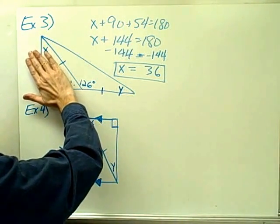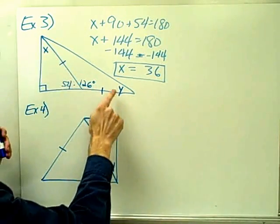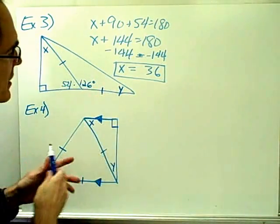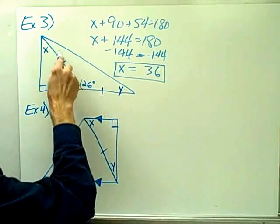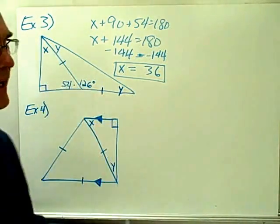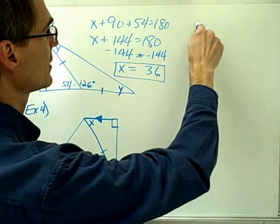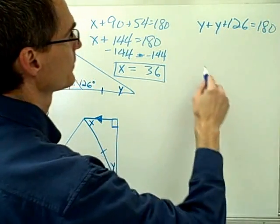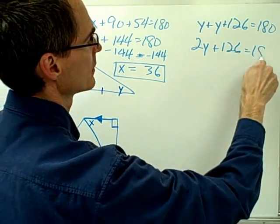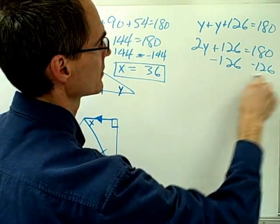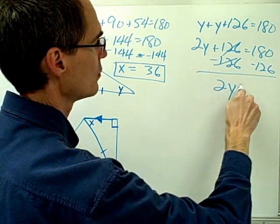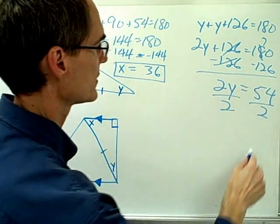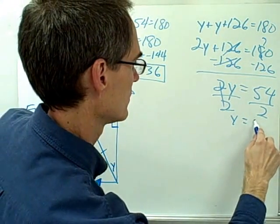Now for y: if I cover up the right triangle, I have an isosceles triangle with vertex angle 126 degrees and two base angles, each equal to y. Since it's an isosceles triangle, the two base angles must be congruent. Using the triangle sum theorem: y plus y plus 126 equals 180, so 2y plus 126 equals 180. Subtracting 126 gives 2y equals 54, and dividing by 2 gives y equals 27.